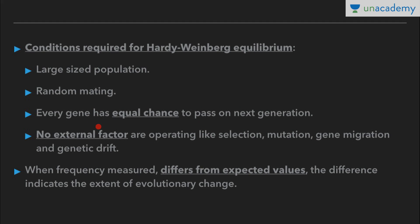Because selection, mutation, gene migration, and genetic drift are generally present, the frequency differs from the expected value and it is no longer P plus Q equals 1. These external factors cause a disturbance in Hardy-Weinberg equilibrium, or genetic equilibrium, and this leads to evolution. When frequency is measured, it differs from expected values, and the difference indicates the extent of evolutionary change — the greater the difference, the greater the evolution.